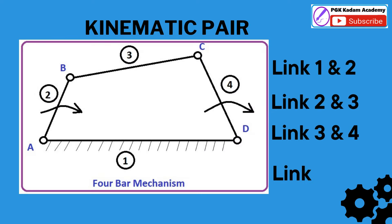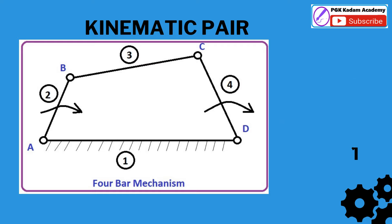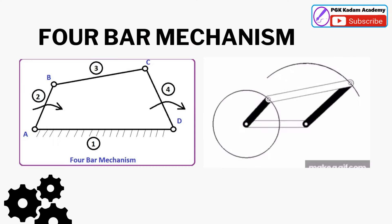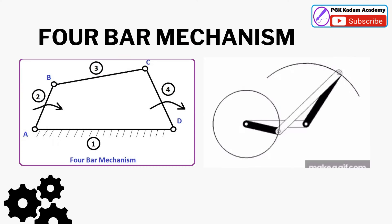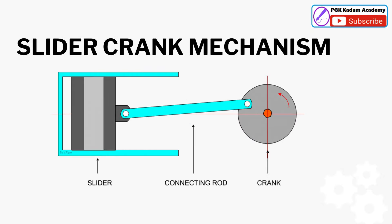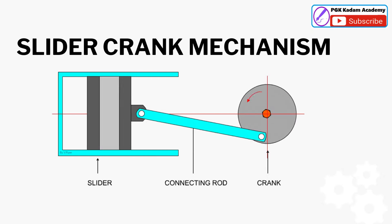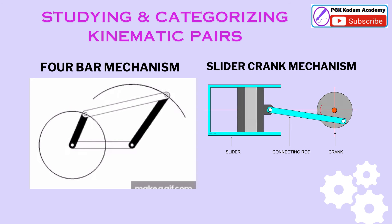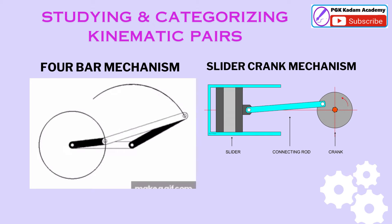In a four-bar mechanism, as shown in the figure, the pair between link 1 and link 2, and similarly other pairs with links, can be identified. Understanding and analyzing Kinematic Pairs are essential for designing and optimizing mechanical systems, as they provide insights into the motion and interaction of various components.